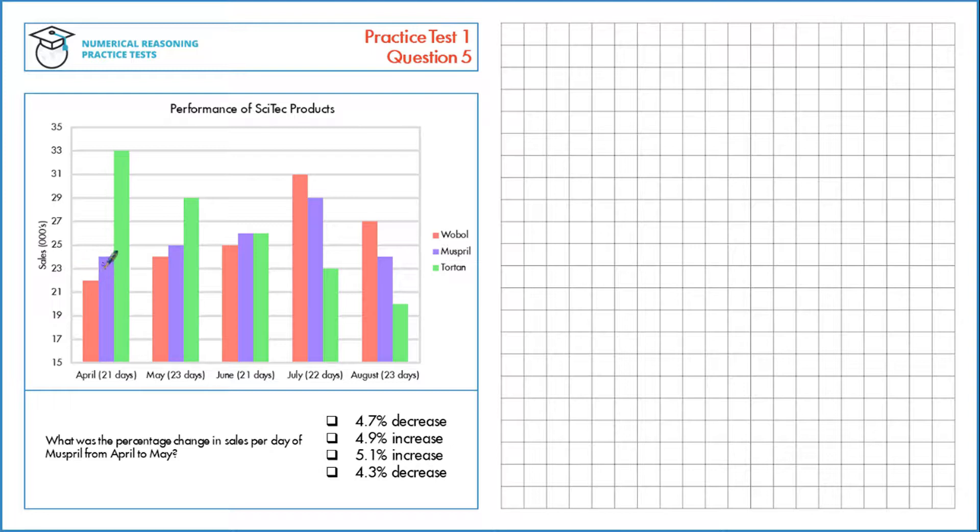So the sales for April are 24,000, and we want the sales per day. In April, there are 21 days of sales, so divide by 21 to give us 1,143 sales per day.